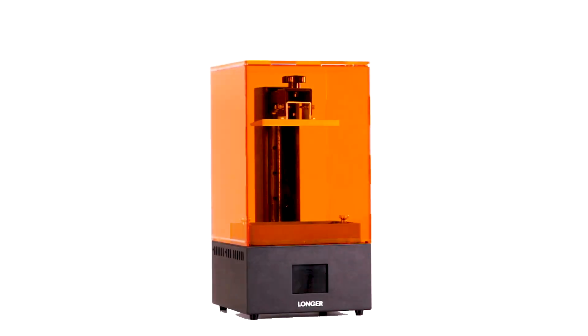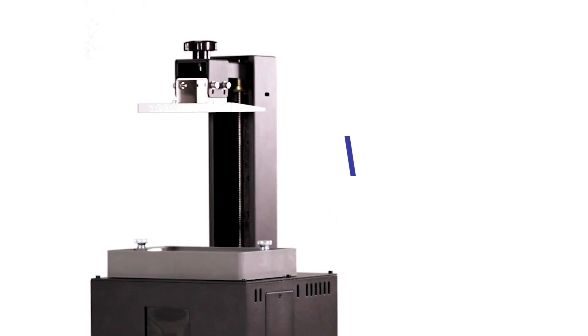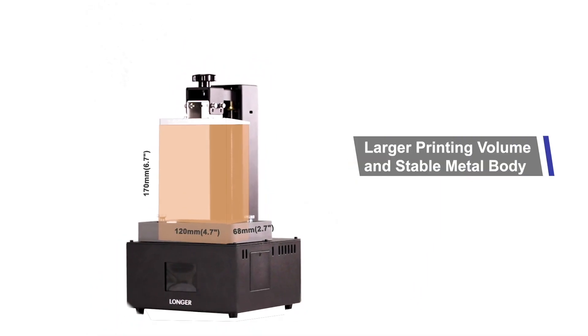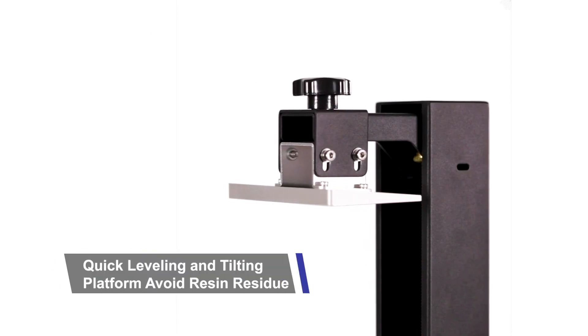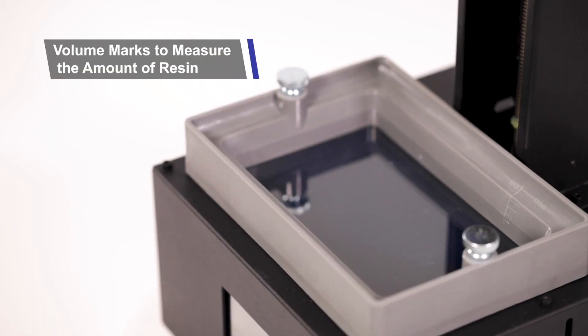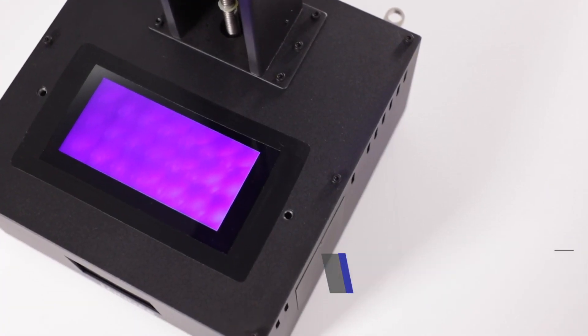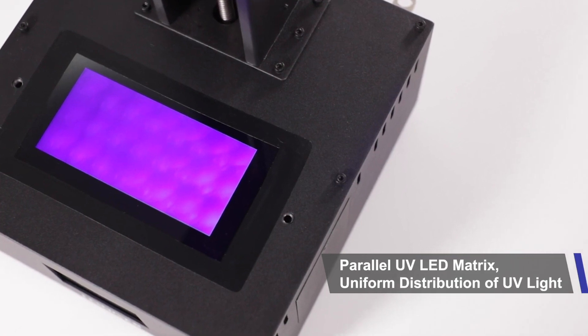For number five, the Longer Orange 30. This printer has a 2K resolution that uses 32 LED ultraviolet modules that can simultaneously shine on the print bed to increase the printing speed. It has a build volume of 120 by 68 by 170 millimeters and has a selling price of $200.